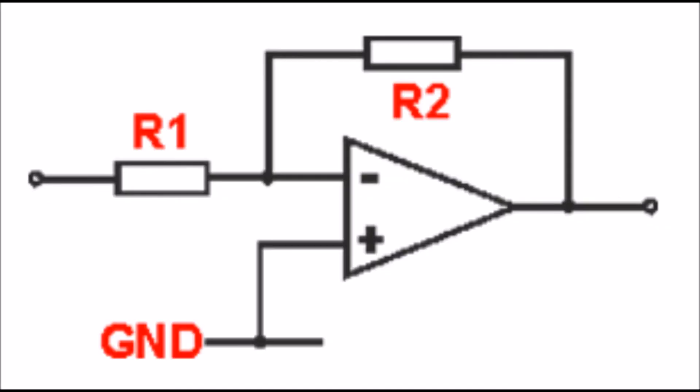The reason why this works is because the current is the same through both resistors. Changing the resistance values also changes the voltage drop needed to make the situation valid. By taking V out over V in, we find the value for that relationship to be R2 over R1, which is the gain of the circuit.